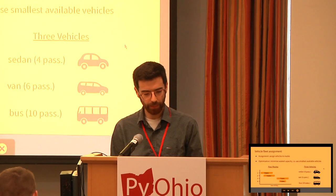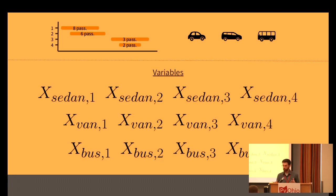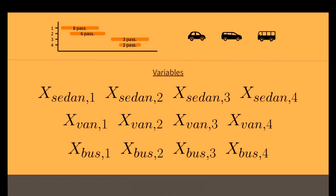So three types of constraints. In practice you can imagine lots of others — maybe not every vehicle is available at any time of day, or maybe you can't assign a vehicle to two routes that are very far away from each other. But for simplicity, let's stop here. How are we going to write these constraints as linear inequalities? We have four routes and three vehicles, which means 12 variables — one for each vehicle-route pair. In any assignment these variables are 0,1 valued. For example, if x_van_3 is 1, that means we're going to assign the van to route 3. If it's 0, we're not. Let's start capturing our constraints as linear inequalities over these 12 variables.